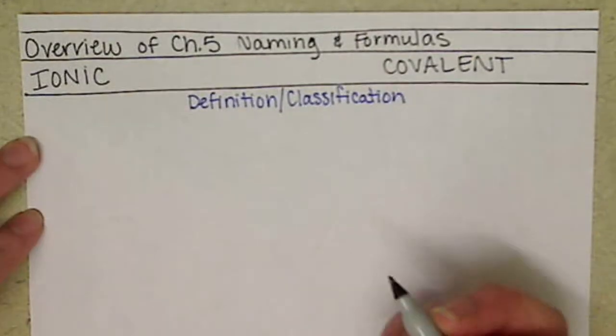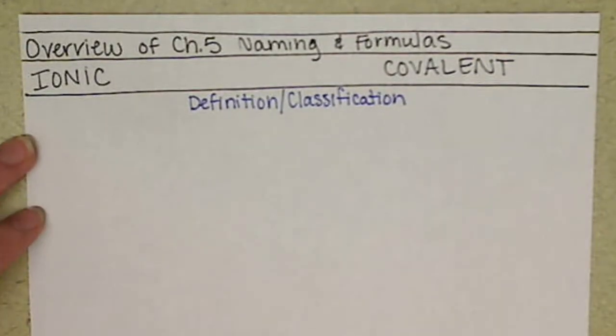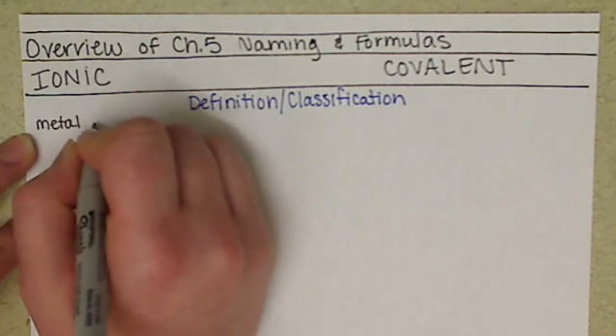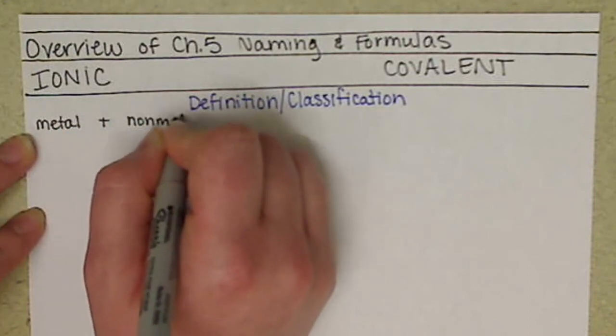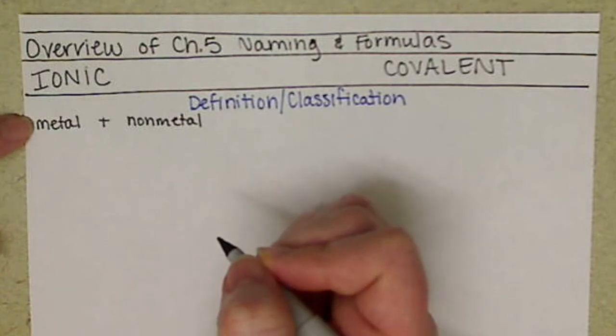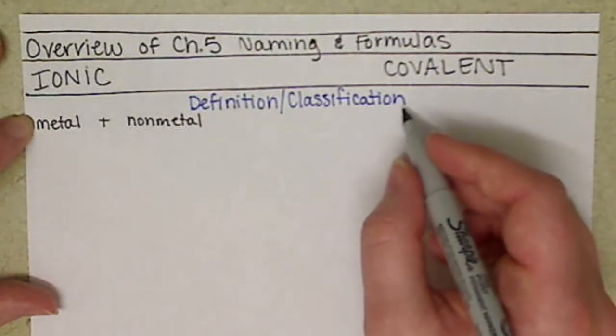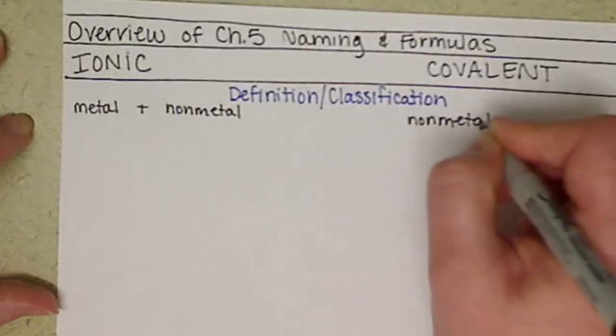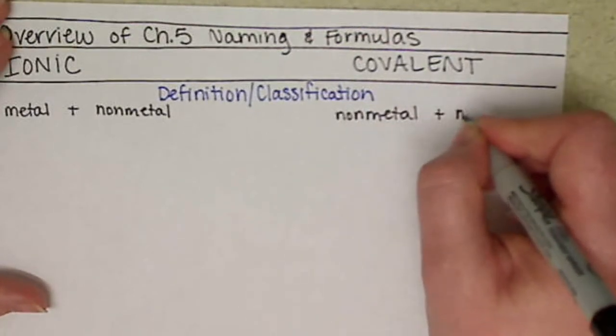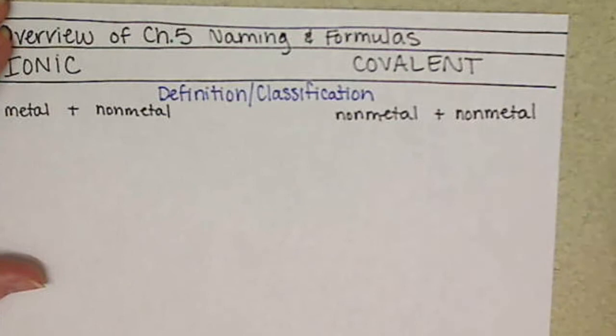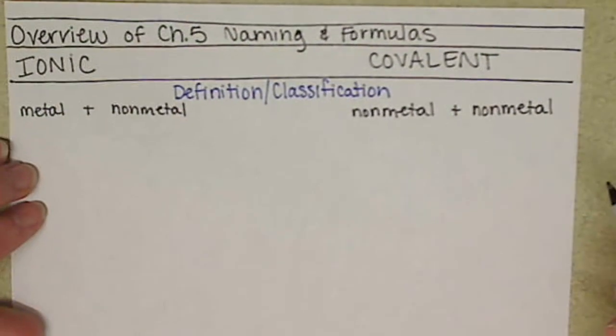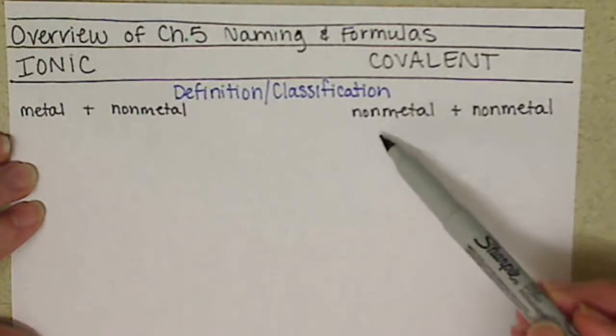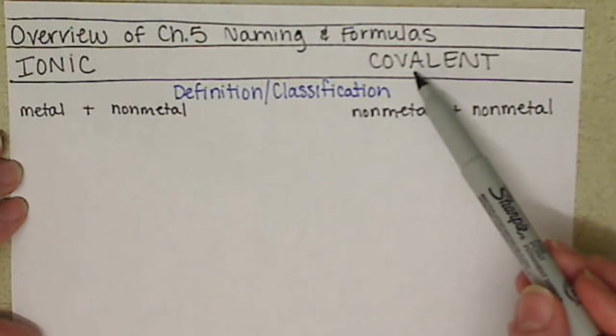Ionic compounds are between a metal and a nonmetal, and the metal is always listed first. Whereas in a covalent compound, this is a nonmetal with a nonmetal. So if your formula starts with a metal, you know it's ionic. If your formula starts with a nonmetal, it is covalent.